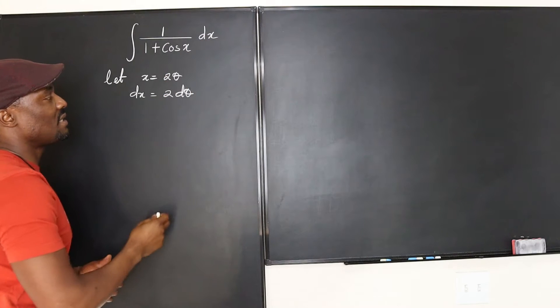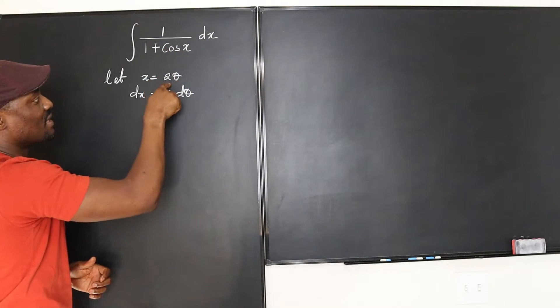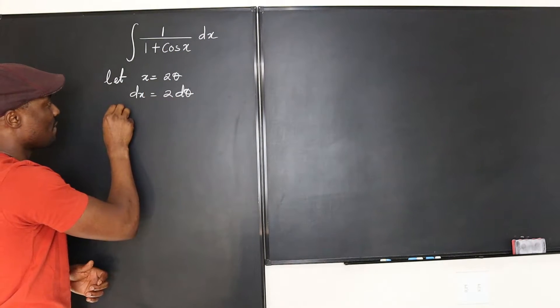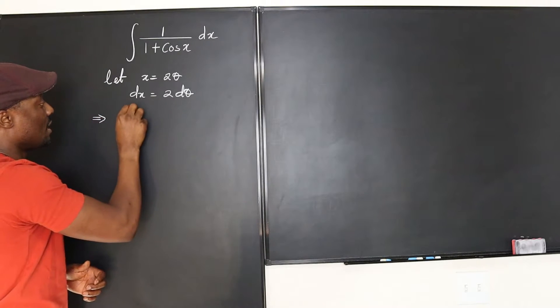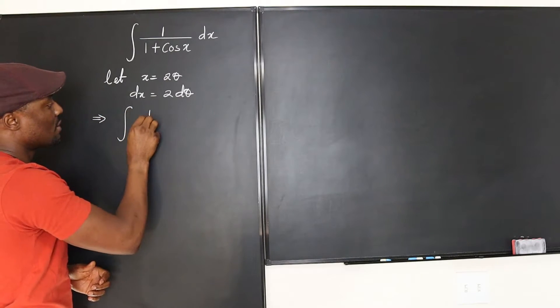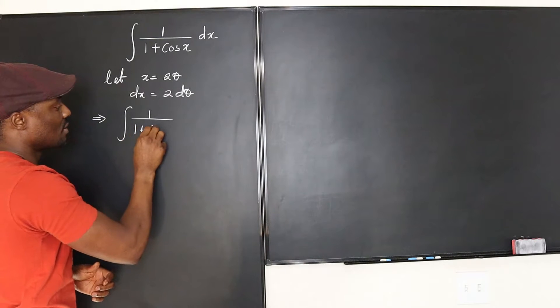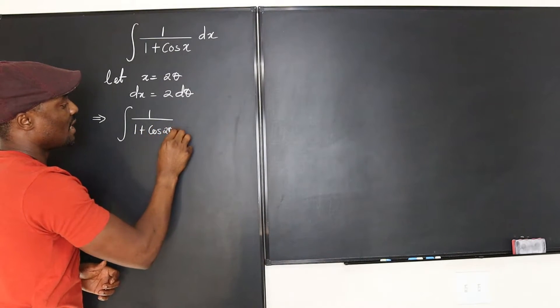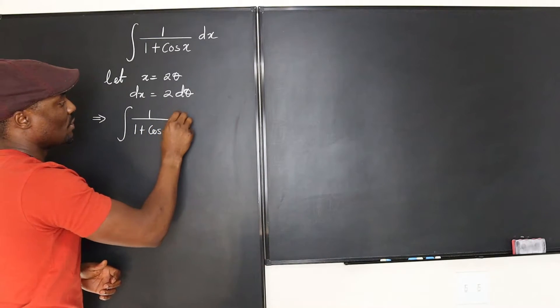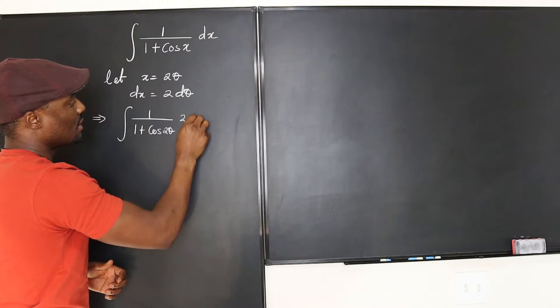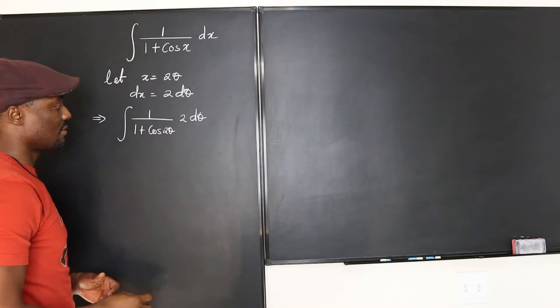So we can just go here and replace it and rewrite this as 2 theta. So we can write, this implies that we have 1 over 1 plus cosine 2 theta dx will be 2 d theta. Okay?